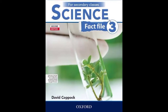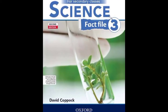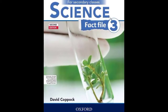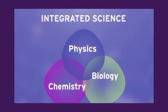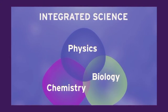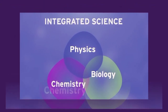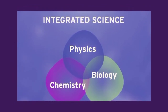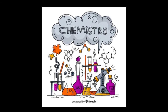You have studied Fact File 1 in Class 6 and Fact File 2 in Class 7. Now in Class 8, we are going to study Fact File 3. Likewise our previous books, this science book is comprised of all the branches of science: chemistry, physics, and biology. I am going to tell you which chapters we will cover in each branch.